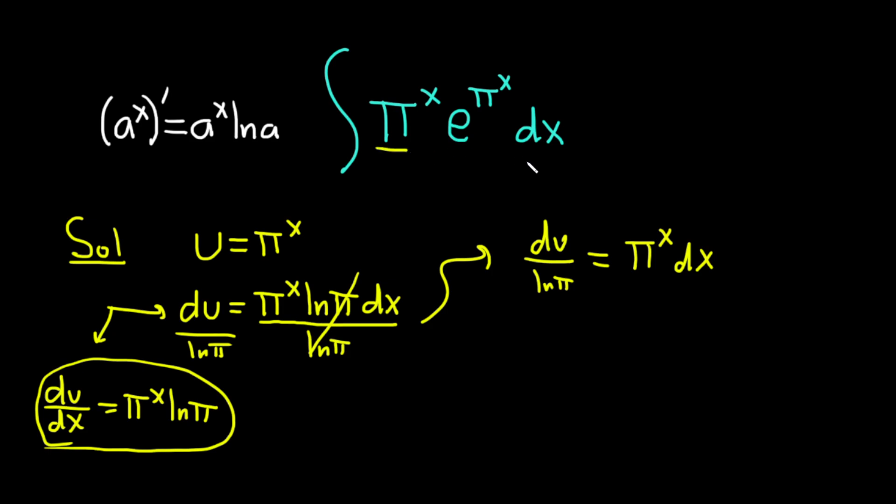So now it's better. Now we have π to the x dx. And we've gotten rid of this ln π because there's no ln π in the problem up here. I'm going to rewrite this one more time as 1 over the natural log of π du is equal to π to the x dx. All right, we're ready to make our substitution.